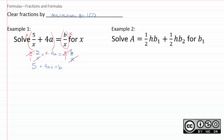We just have 5 plus 4ax equals b, and now we just solve this like a typical formula. So we'll subtract 5 from both sides because we want to get x alone, giving us 4ax equals b minus 5. And then to finish it off, we will just divide both sides by everything that is in the way of x being alone, namely 4a. So it turns out that x equals b minus 5 over 4a.